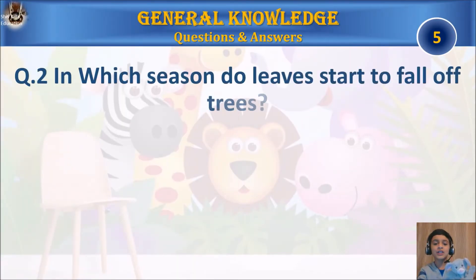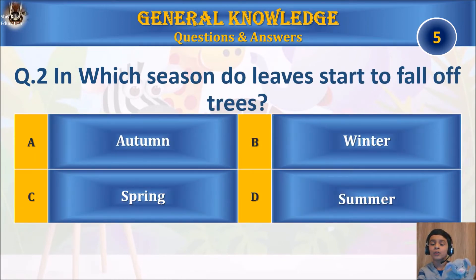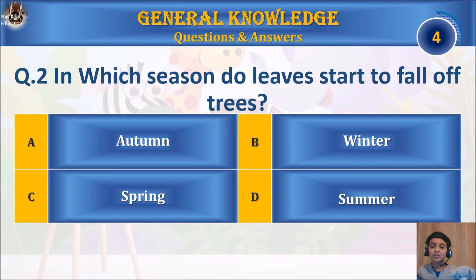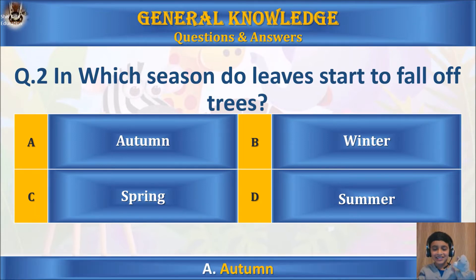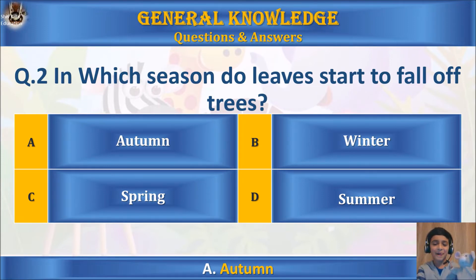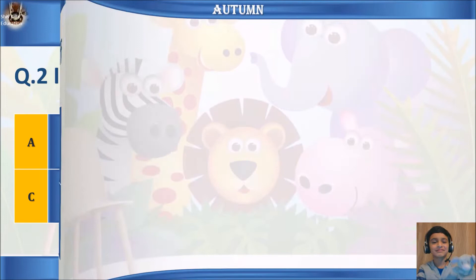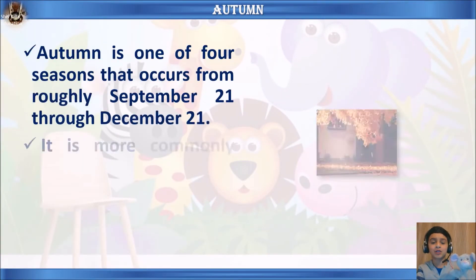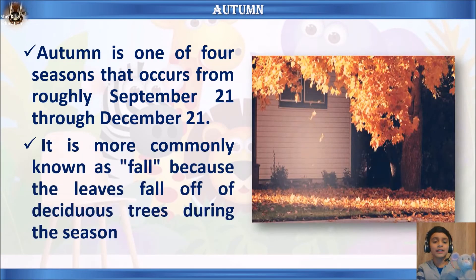Question two: in which season do leaves start to fall off trees? A) autumn, B) winter, C) spring, or D) summer? Your time starts. You're right — autumn! Do you like the autumn season? Yeah, me too.